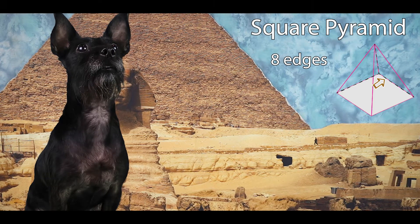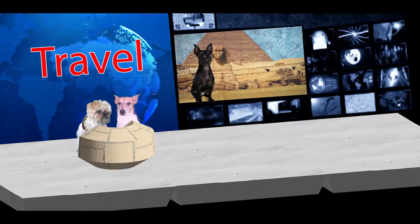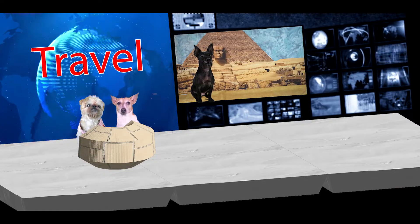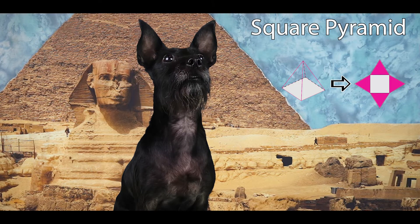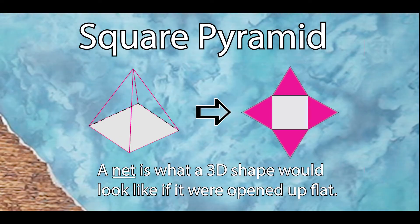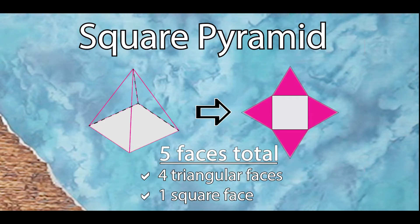A square pyramid has eight edges and it also has five vertices. And how many faces does it have, Lottie? I'm not talking about that guy behind you. It's quite funny that you mentioned faces because I'm about to go into a concept that is very interesting. A net is what a 3D shape would look like if it were opened up flat. They help you see the faces on the shape. Therefore, a square pyramid has five faces total, four triangular faces, and one square face.